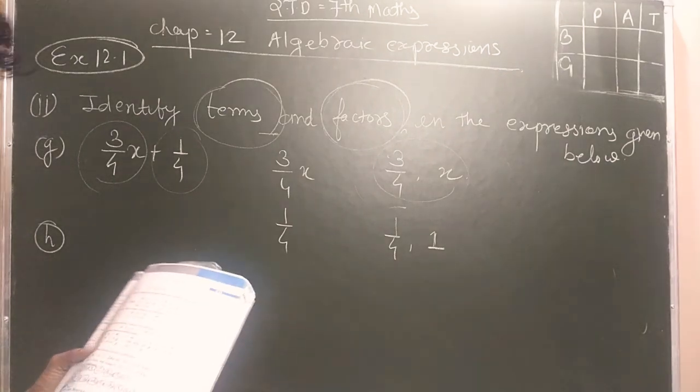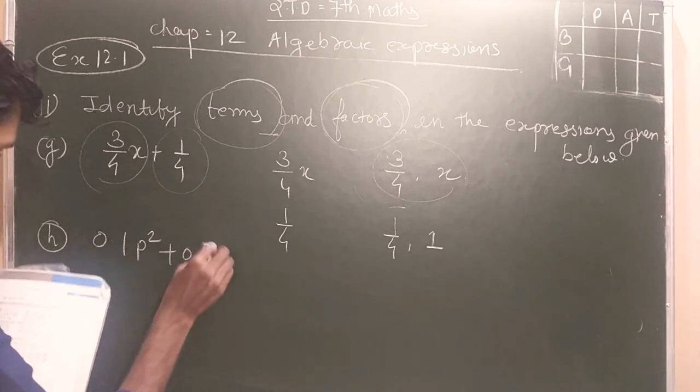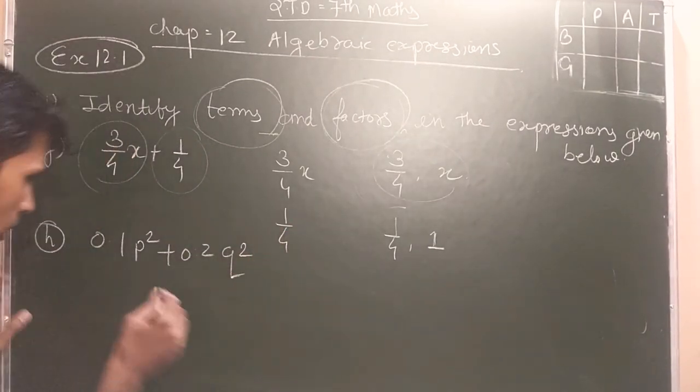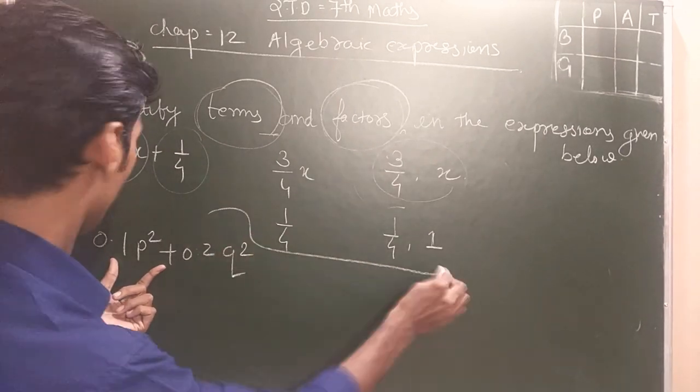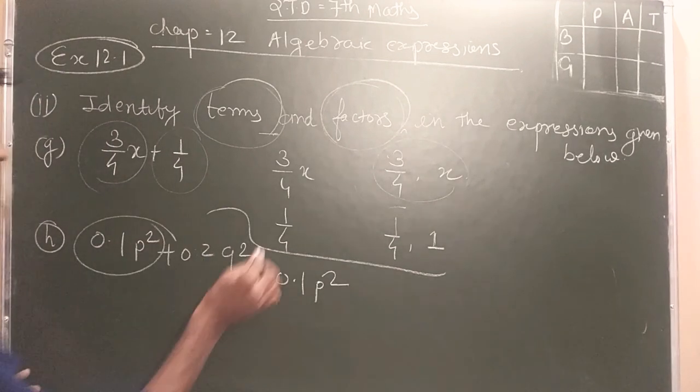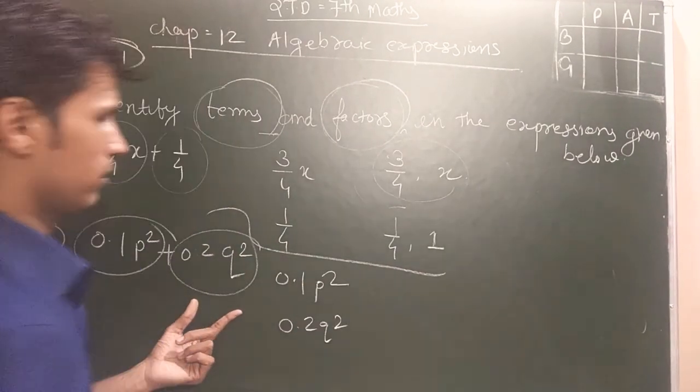Now question number H: 0.1P² plus 0.2Q². Now students, factors can be defined. 0.1P² is first factor, this is second factor: 0.2Q².